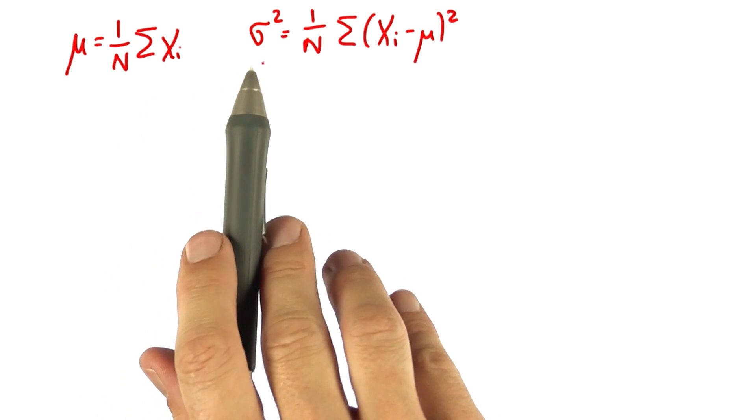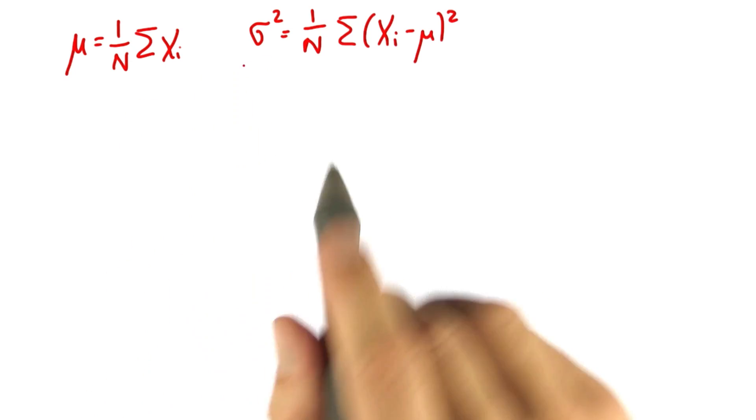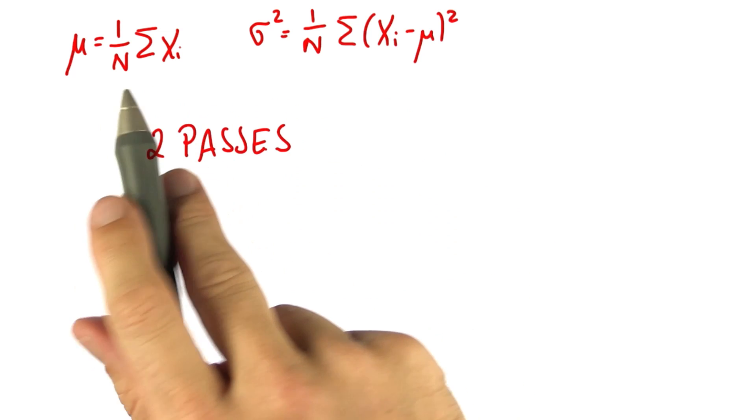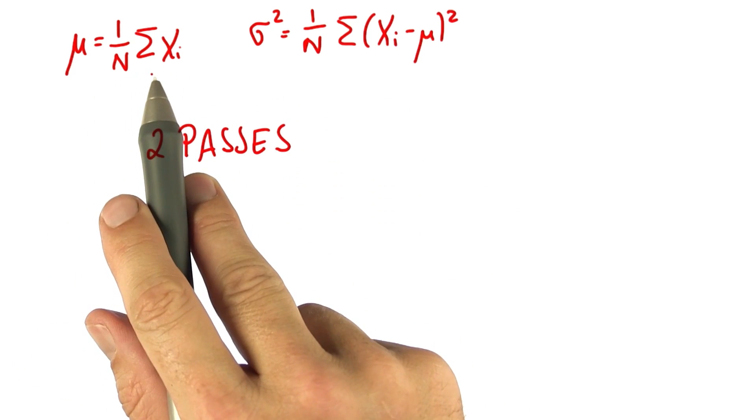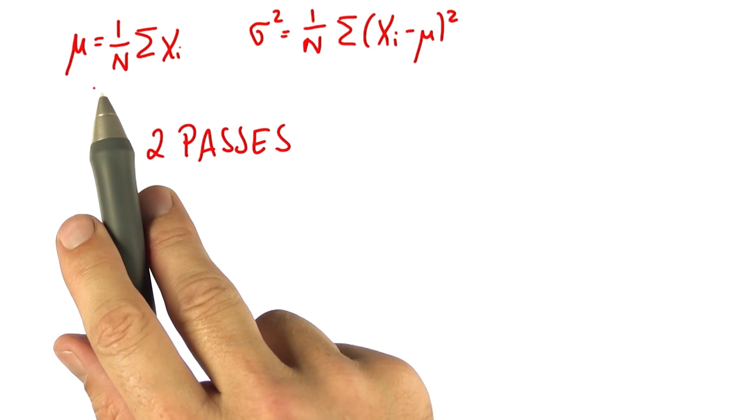The problem with that is that they require two passes through the data. First, I have to go through all the data and compute the mean. I do this by summing up all the data and dividing it by the total number of data items.